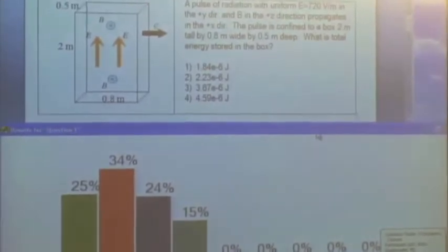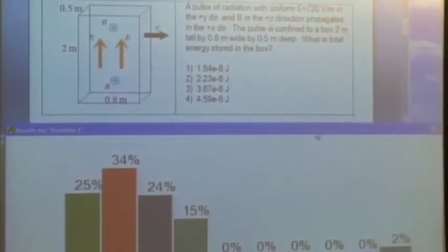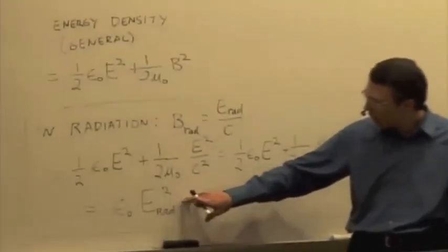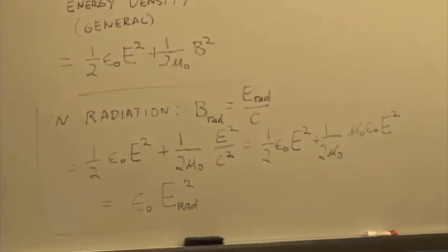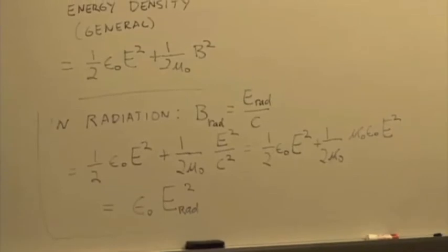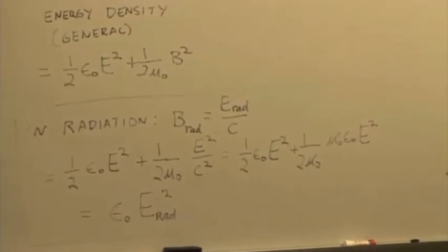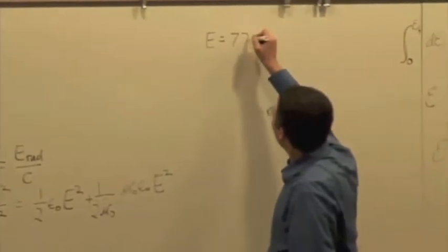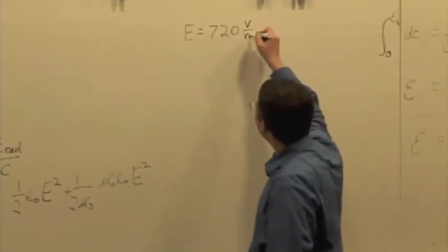And that's all we need, because this is radiation. We could calculate the magnitude of the magnetic field if we wanted to, but just to get the energy density, all we need is the square of the radiative field. And I hope the answer's up there. Let's find out. The electric field is 720 volts per meter.